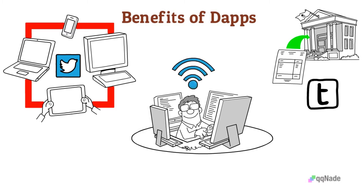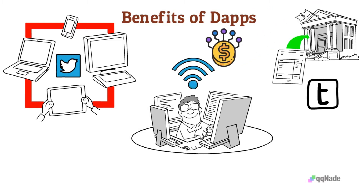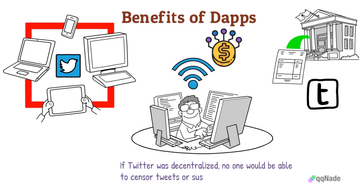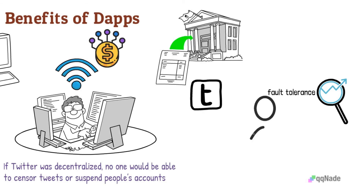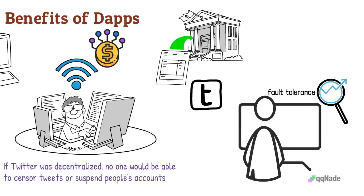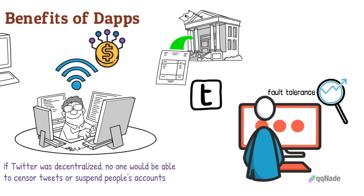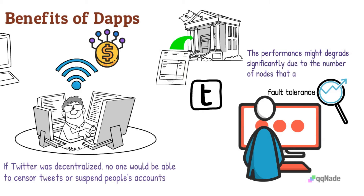No one individual would be able to dictate what goes on in a decentralized app. If Twitter was decentralized, no one would be able to censor tweets or suspend people's accounts. The next benefit is fault tolerance. If a single computer goes out in the network, the app would still function fine. The performance might degrade significantly due to the number of nodes that are down, but most of the network would still function.